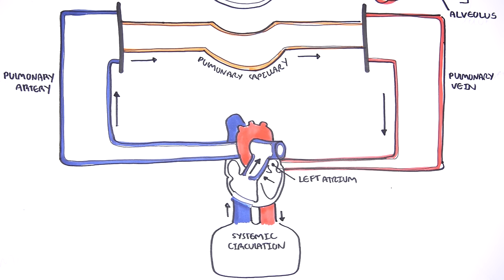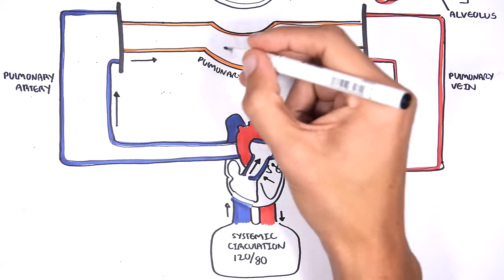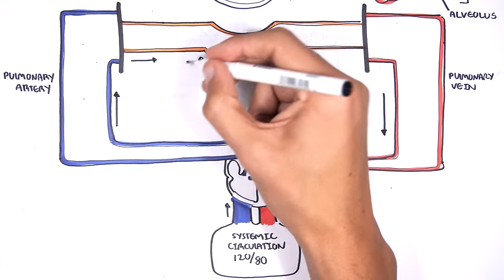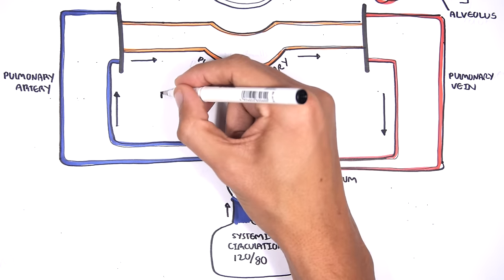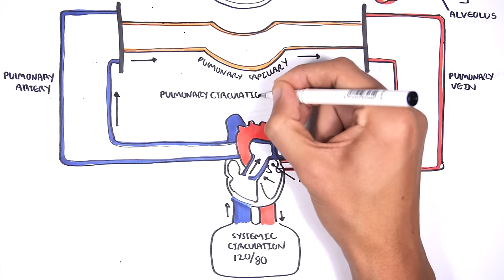When we measure blood pressure, we are actually measuring the systemic circulation pressure, not the pulmonary circulation pressure. The normal systemic circulation pressure, or normal blood pressure in our body, is about 120 on 80. The pulmonary circulation pressure on the other hand is 24 on 12.